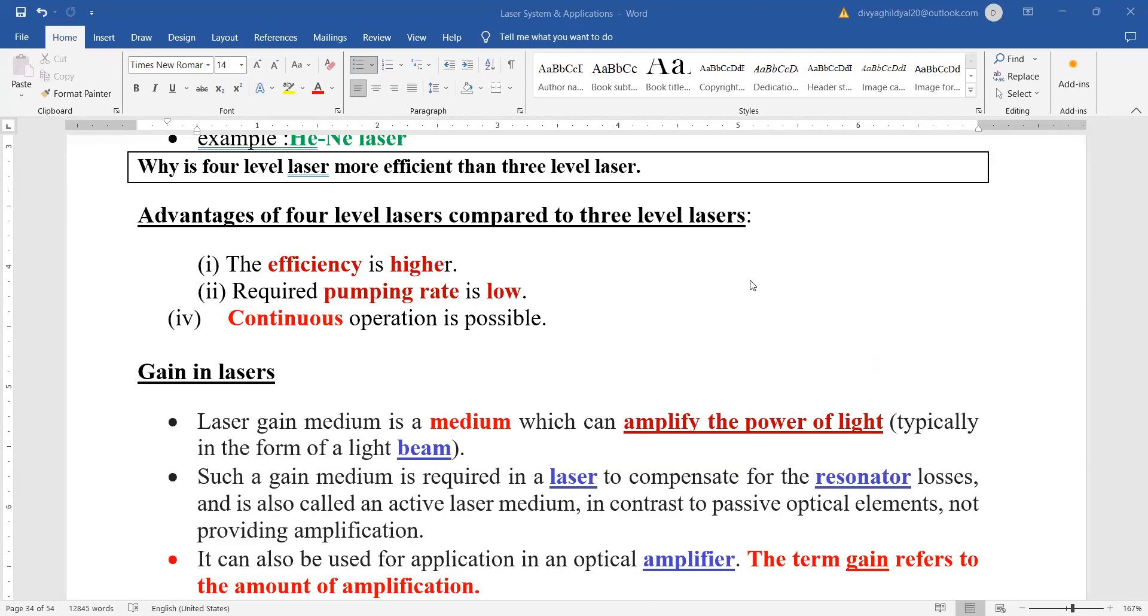Hello students. In the previous lecture, we discussed the three types of laser energy level setup: two level, three level, and four level. We studied that two level laser setup cannot give us output of laser beam. Three level gives a pulsed output, four level gives a continuous wave output, and four level energy setup is better than three level. Let us continue.